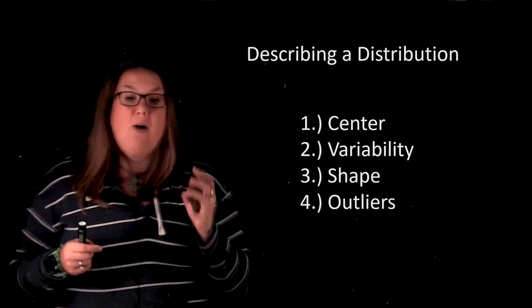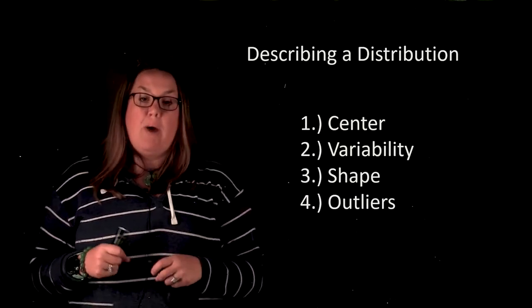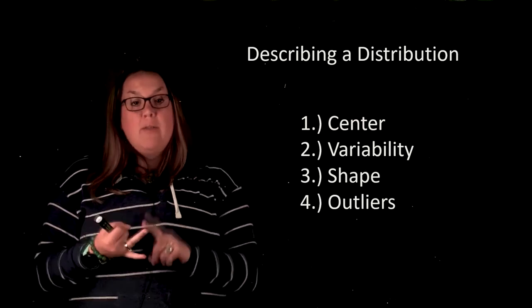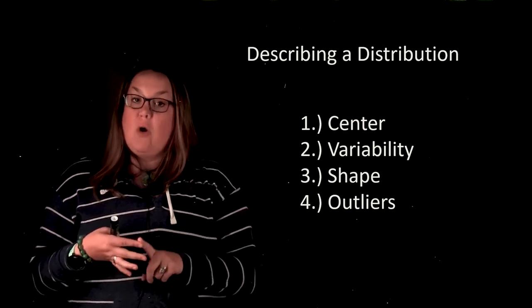So when you describe a distribution, I have four things that you're going to need to talk about. You want to talk about the center, the variability, the shape, and if there are outliers present.